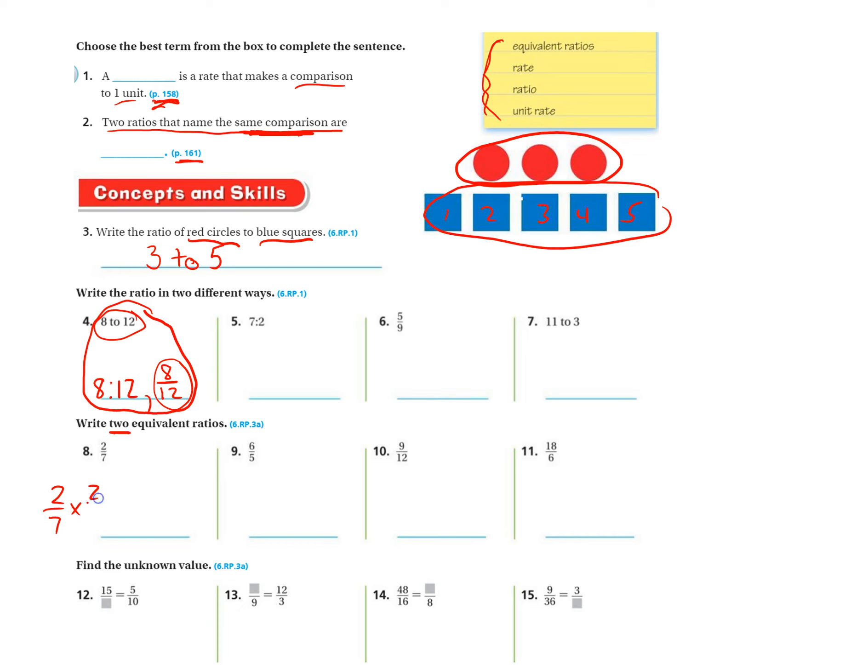So I'm going to multiply this by two over two. And remember, whatever you pick, you're going to multiply the numerator and the denominator both by that number. So two times two is four. Seven times two is fourteen. There's one equivalent ratio.